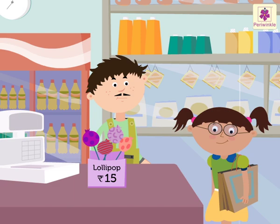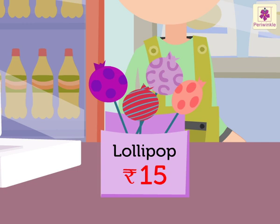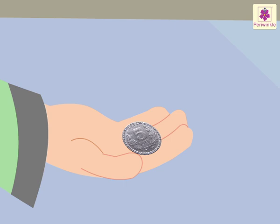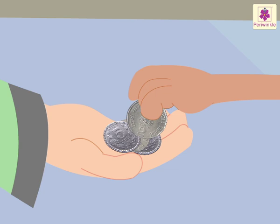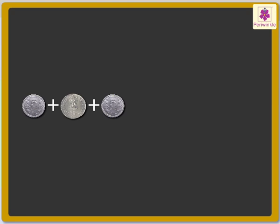The cost of the lollipop is 15 rupees. Saira gives a 5 rupee coin, then a 2 rupee coin, then a 2 rupee coin, and at last a 1 rupee coin. It means she gave 5 plus 2 plus 2 plus 1, which is equal to 15 rupees to the shopkeeper.